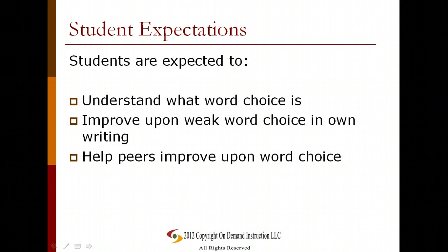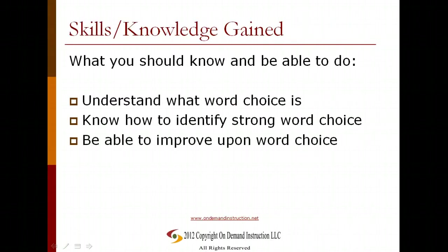The expectations of students include understanding what word choice is, improving upon weak word choice in your own writing, and helping your peers improve upon their word choice. Sometimes improving your own word choice can be difficult, and it can be helpful to work with a partner. What you should know and be able to do at this point is to understand what word choice is, know how to identify strong word choice, and be able to improve upon your word choice. I hope this information has been helpful to your writing. Good luck.